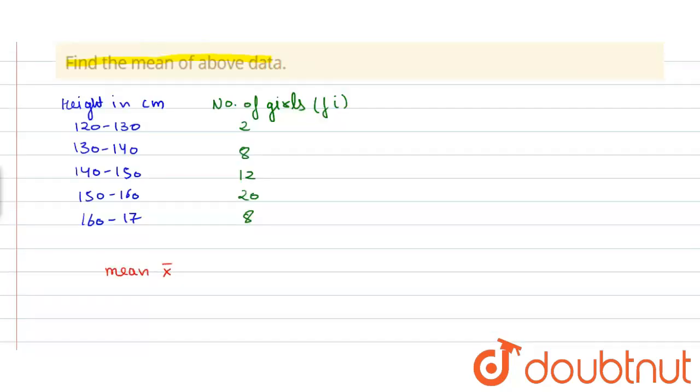We know that mean x̄ is equal to Σfixi upon Σfi. So to find the mean, we have to find fixi and fi. xi is 120 plus 130 upon 2 which is equal to 125, and 130 plus 140 upon 2 which is equal to 135, and similarly 145, 155, and 165.